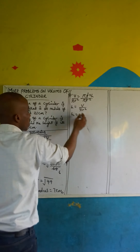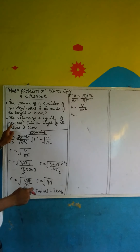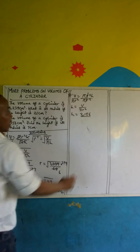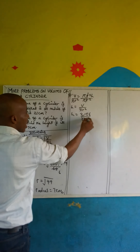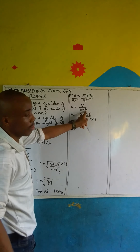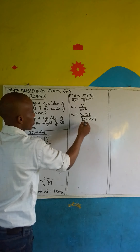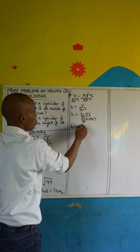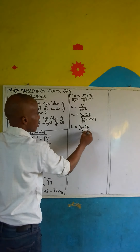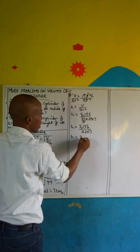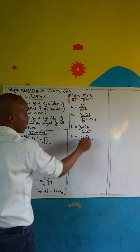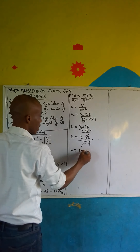So height will be: the volume from the question is 2,156, divided by π which is 22 over 7, times the radius squared — the radius is 7, so that's 7 times 7. The 7s cancel, leaving 22 times 7, which is 154. Dividing 2,156 by 154, the height will be equal to 14 cm.